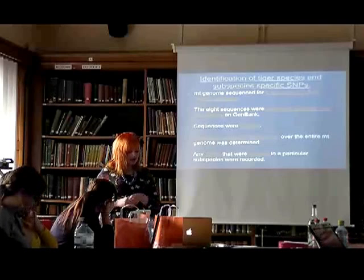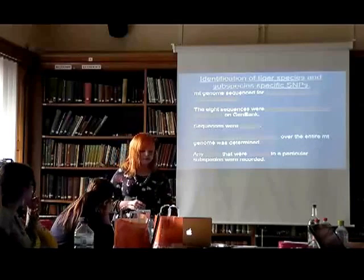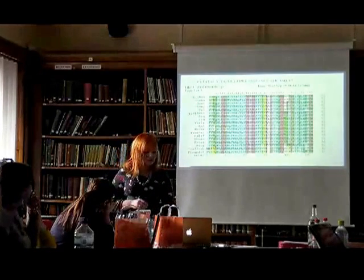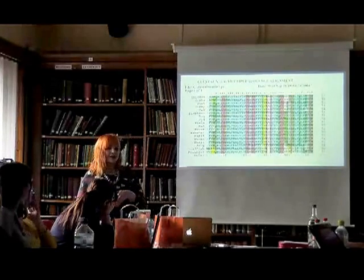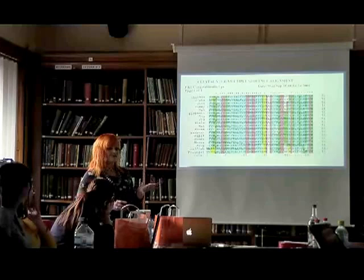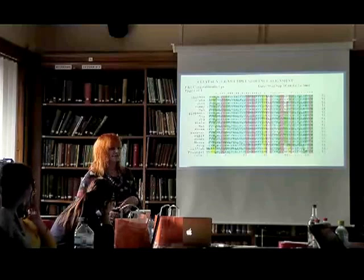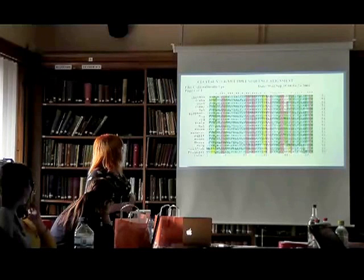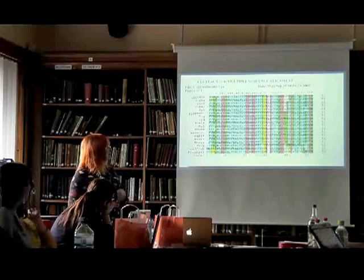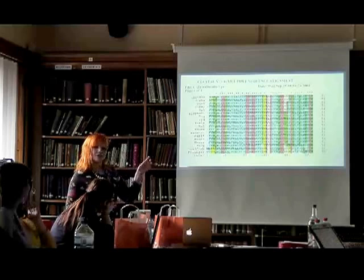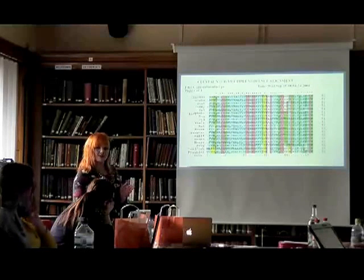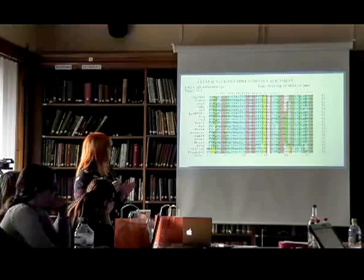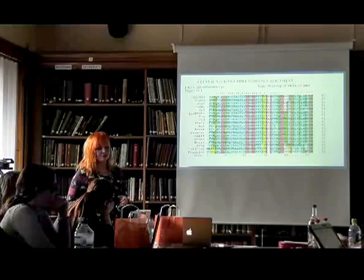The SNPs specific to particular subspecies were then recorded. Here is an example of the ClustalX output — it looks quite complicated but is manageable. This example uses amino acid bases whereas ours uses base pairs. You can fairly easily tell which sections are different between species, and that is how you define where the species-significant SNPs are compared to ones that are not species-significant.